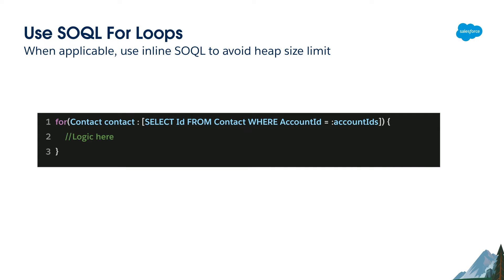Another best practice for performance is to use SOQL for loops. Instead of storing your queried records in a list, you can iterate directly with a SOQL for loop. This is beneficial because if you have large result sets of 40,000 or 50,000 records, storing them in lists would consume a large amount of heap size. Heap size is the memory allocated for storing runtime data like maps, variables, and lists, and Salesforce enforces a heap size limit.